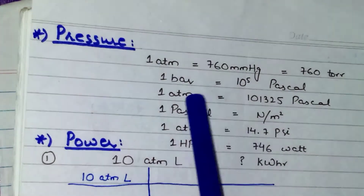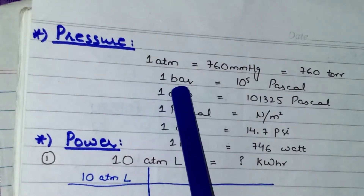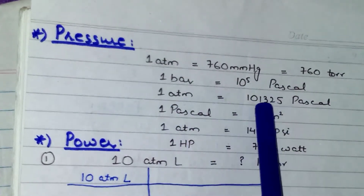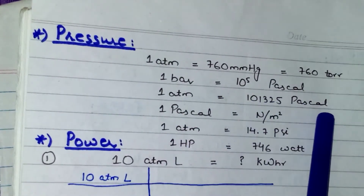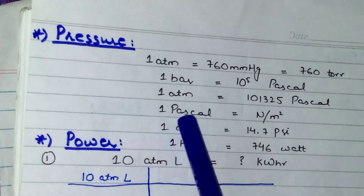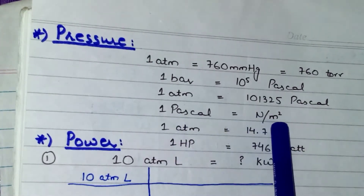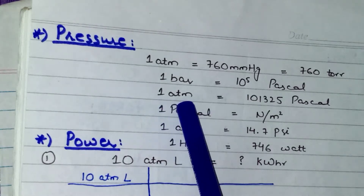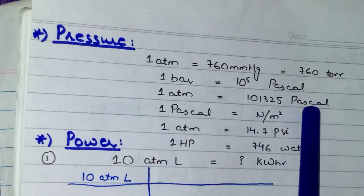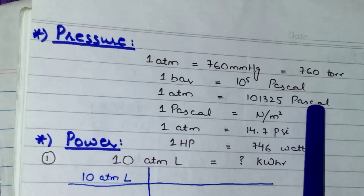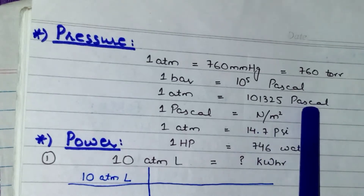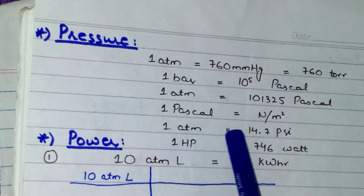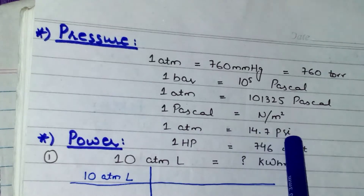Dear students, the second relation is 1 bar equals to 10 to the power 5 Pascal. Then 1 atm equals to 101,325 Pascal. And then 1 Pascal equals to Newton per meter square. This means that 1 atm equals to 101,325 Newton per meter square — instead of Pascal, I can write Newton per meter square as well. And finally, 1 atm equals to 14.7 psi.